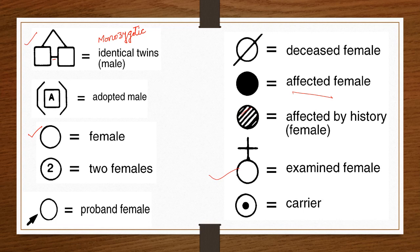The dotted circle — carrier — is a symbol present only for females, not males. A carrier is a female who carries a particular disease gene without expressing it. For example, color blindness and baldness are conditions where females act as carriers. In these genetic disorders, females act as carriers while males are either normal or affected.